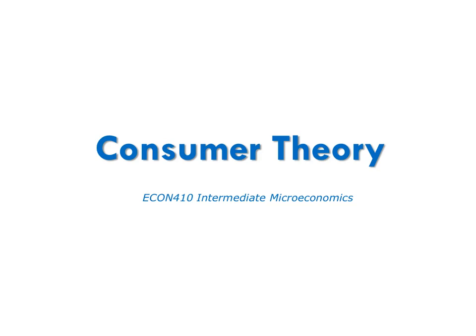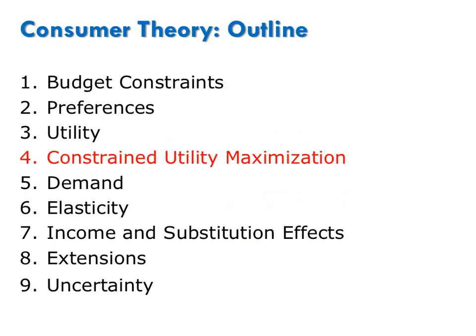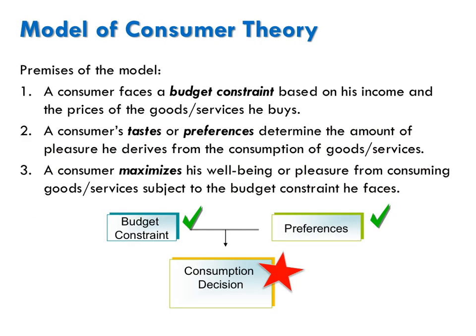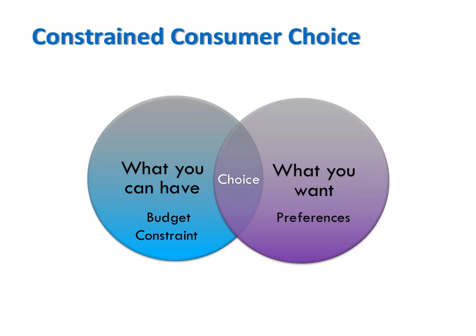This video is part of consumer theory. In it I will present constrained utility maximization. Constrained utility maximization means a consumer considers both their preferences and what they can afford — their budget constraint — when making consumption decisions. The consumer's goal is to maximize their well-being or utility subject to the budget constraint that they face. In other words, choice involves both what you can have, your budget constraint, and what you want, your preferences.